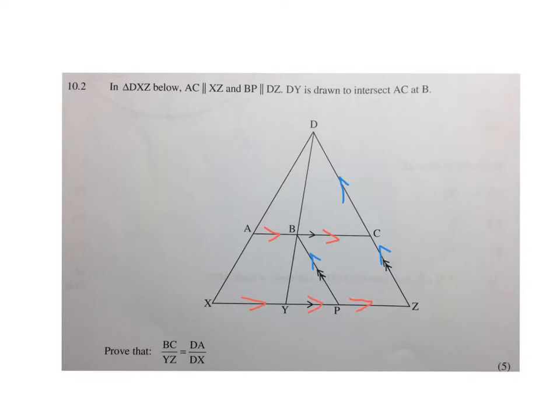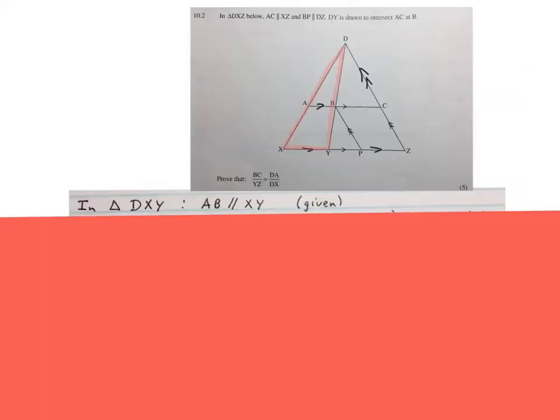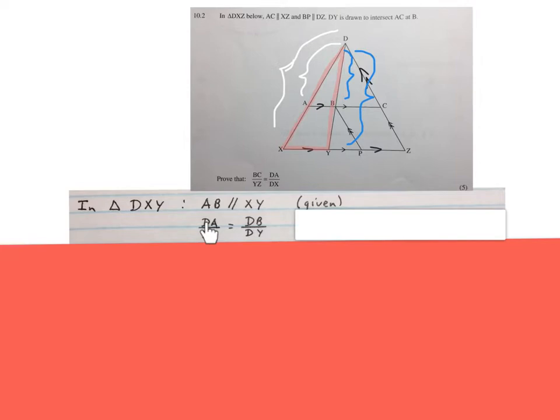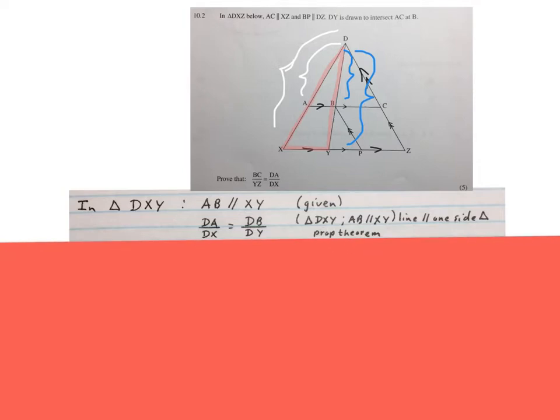One way to answer the question would be to say in triangle DXY, the red one there, AB is parallel to XY. They gave it to us, those two lines are parallel. We can write DA over DX is equal to DB over DY. Then you can give one of three reasons. The one I like, I say I've got a triangle, I name it, and I name the two parallel sides in the triangle. Or you can just write line parallel to one side of a triangle, or proportionality theorem. I think the second one is the easiest one because it says exactly what it is: I have a triangle and one pair of parallel sides.